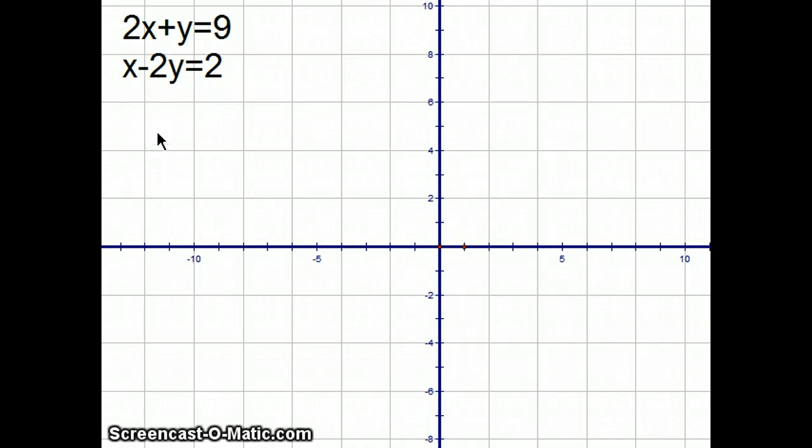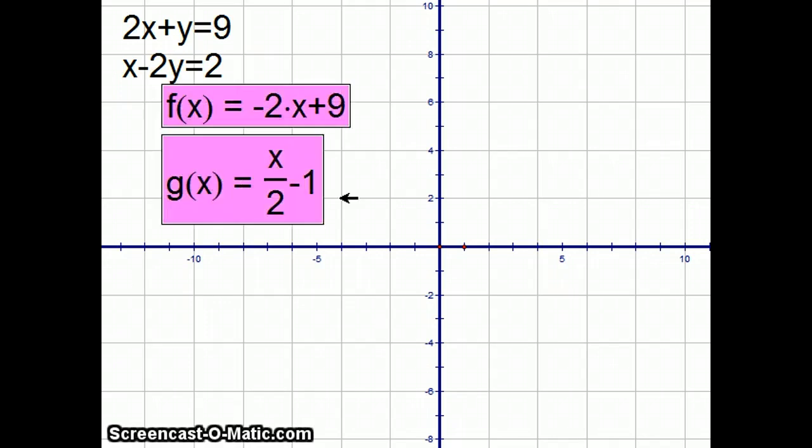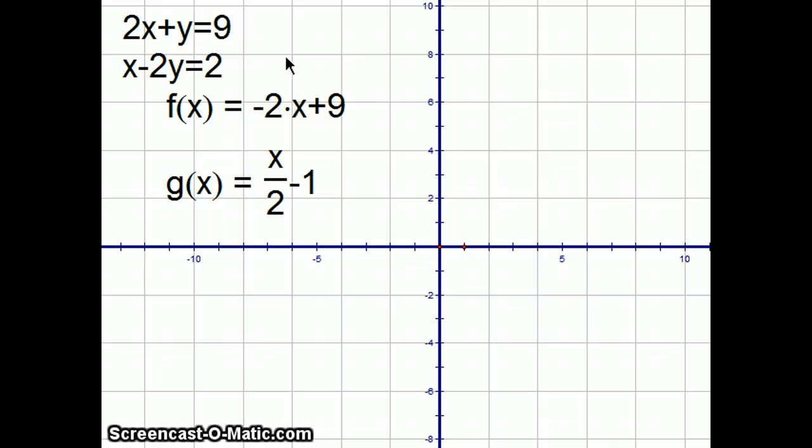2x plus y equals 9, x minus 2y equals 2. You can solve a system of equations by converting both equations into slope-intercept form, by graphing the two graphs, and by looking and locating the intersection point,